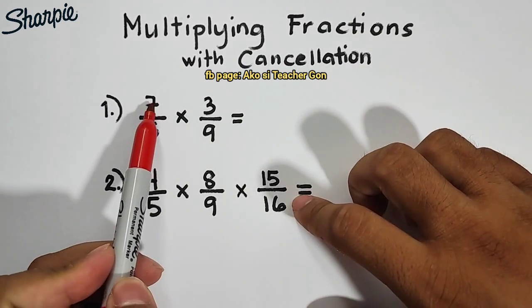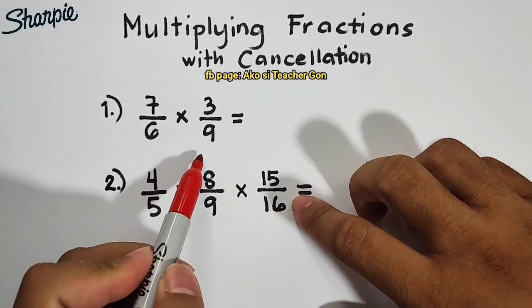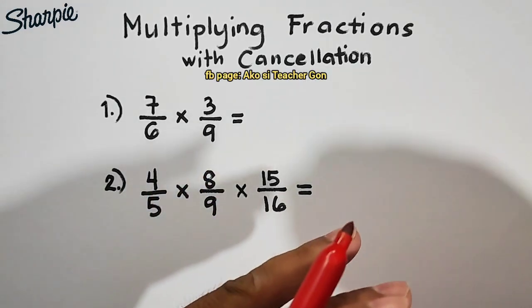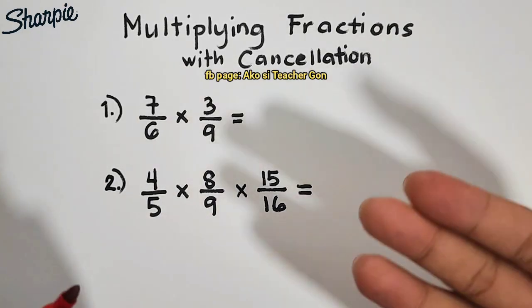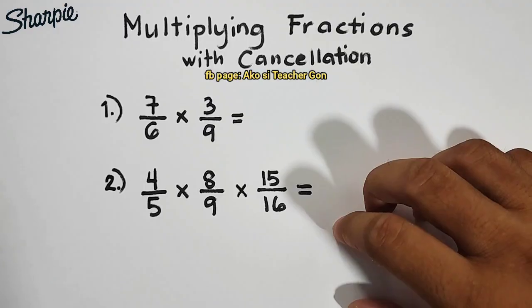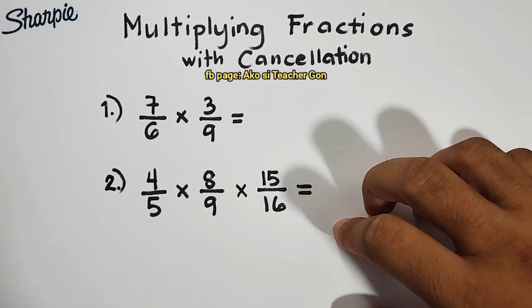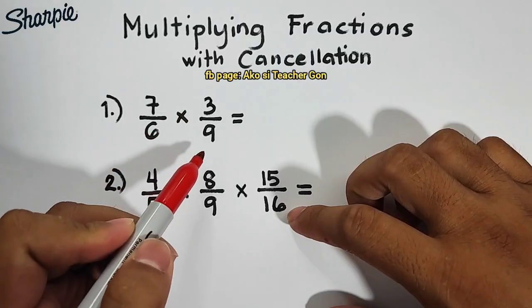Let's say, for example, we have 7 times 3. It will give you 21. Then, you also have 6 times 9, which is equal to 54. So, 21 over 54 is quite big and would be difficult to simplify. So, our target now is to use cancellation method. Let's try. We have 7 over 6 times 3 over 9.